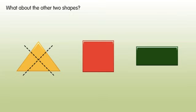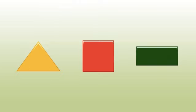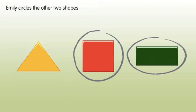What about the other two shapes? Emily circles the other two shapes. Why does she circle the two shapes? They are rectangles.